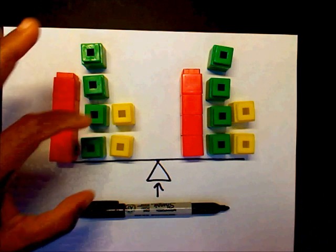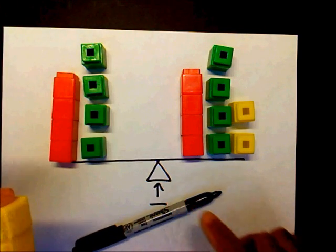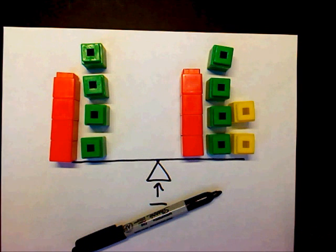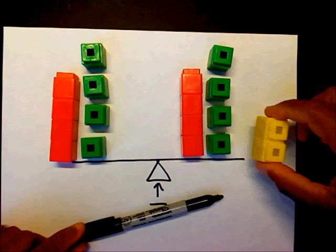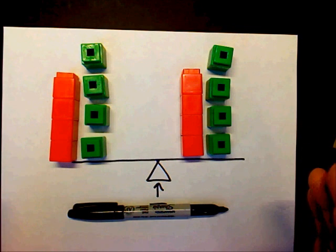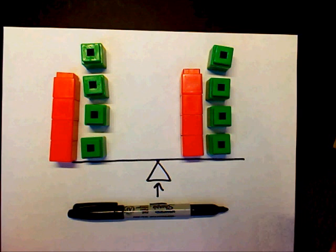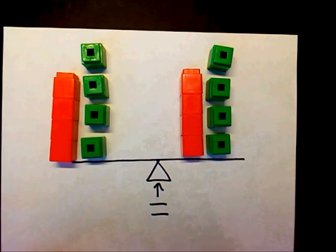Also, if I remove two from this side, that will require the scale to be tilted again, but in order for me to bring that scale back to balance, I have to remove two from this side. That's all solving the equation is: adding something to both sides, subtracting something from both sides, dividing something on both sides, or multiplying something on both sides.